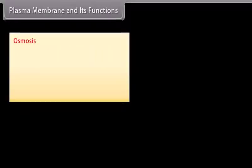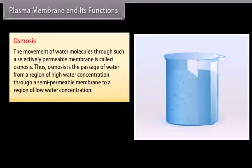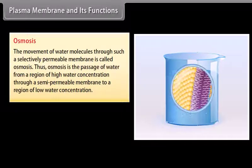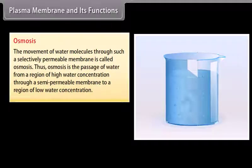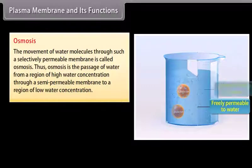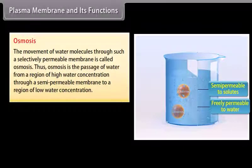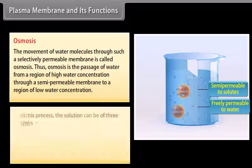Osmosis: the movement of water molecules through a selectively permeable membrane is called osmosis. Osmosis is the passage of water from a region of high water concentration through a semi-permeable membrane to a region of low water concentration.